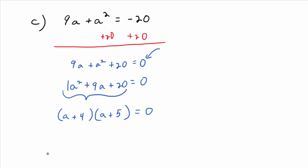You've got your product on the left side — that's the factorization: (a + 4)(a + 5). What does the zero product rule say you can do now with both factors? Either a plus 4 equals zero or a plus 5 equals zero. So you solve both of those and you get a equals negative 4 or a equals negative 5.